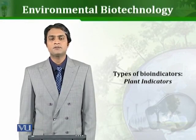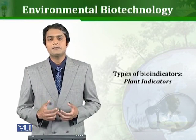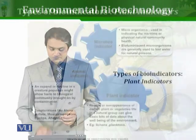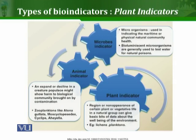In this lesson we will talk about how different plant bioindicators can be used to detect the quality of the environment. As discussed in previous lessons, almost every type of living organism can be used to indirectly assess environmental quality. We can use microbes, different plants, and animals to detect the quality of the environment.